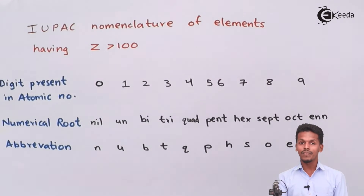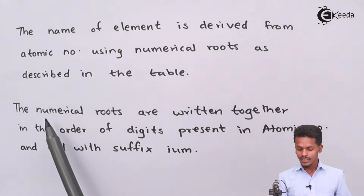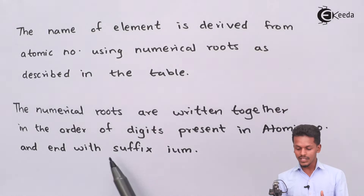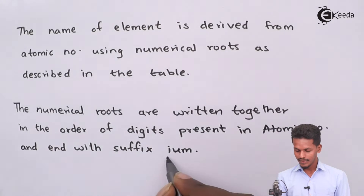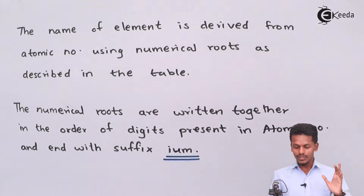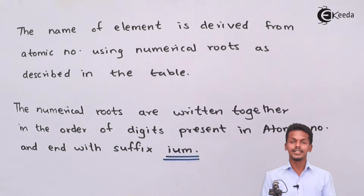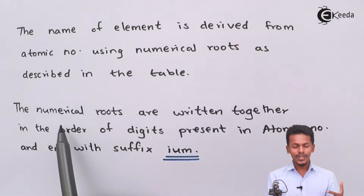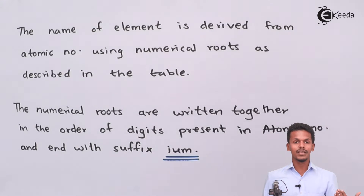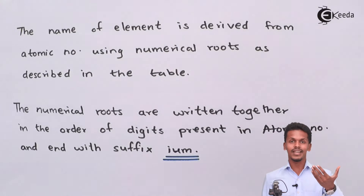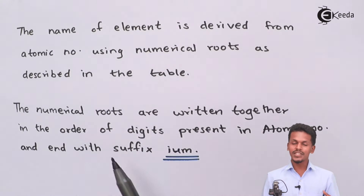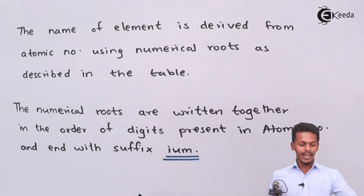The numerical roots are written together in the order of the digits present in the atomic number, and the name ends with the suffix '-ium'. For example, if the atomic number is 101, the digits are 1, 0, and 1. For 1 it is 'un', for 0 it is 'nil', and for 1 again it is 'un', ending with '-ium'. These are the rules we need to know.